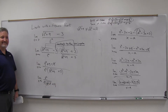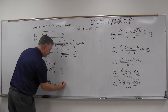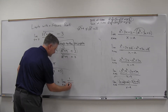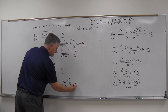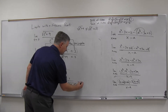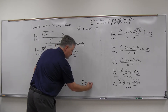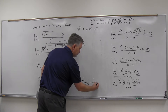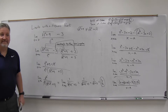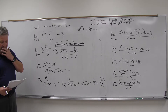That's going to work out, because now I can cancel those t squareds. That will leave me the limit as t goes to zero of one over the square root of t squared plus nine plus three. That's one over three plus three, which is one over six. So that conjugate thing worked out pretty well.